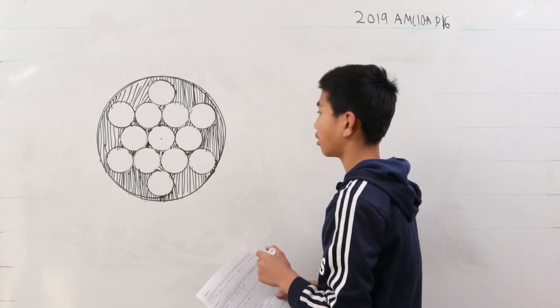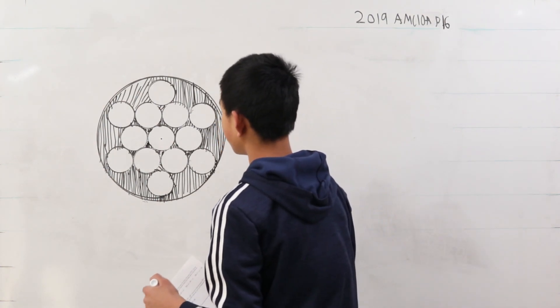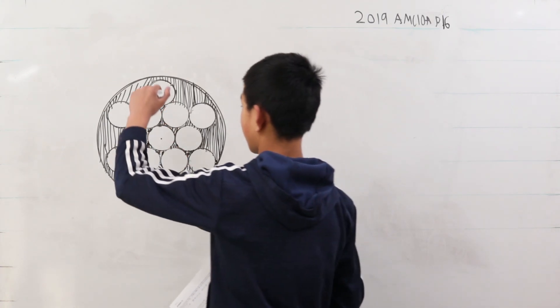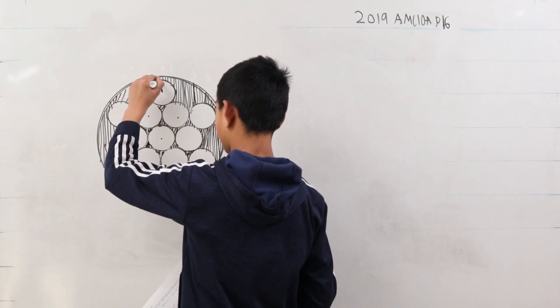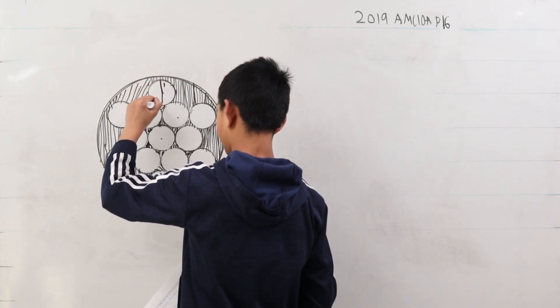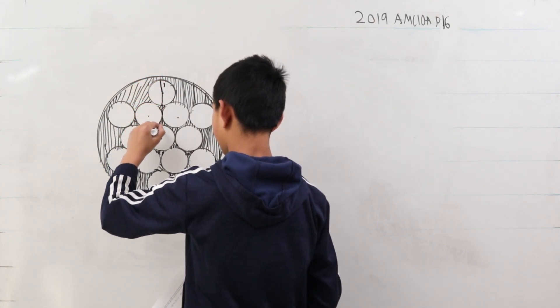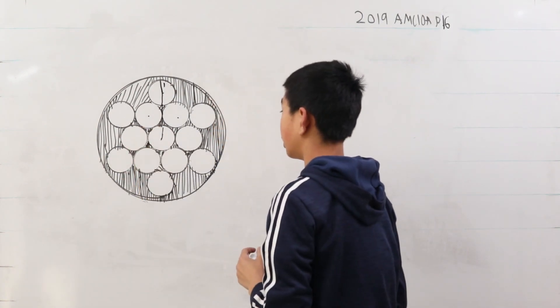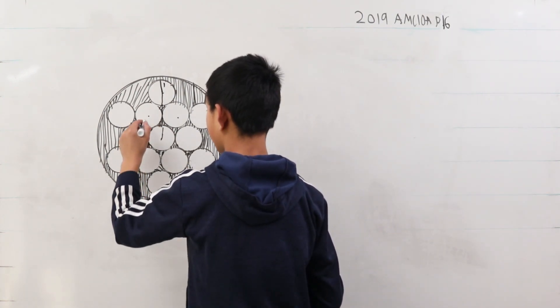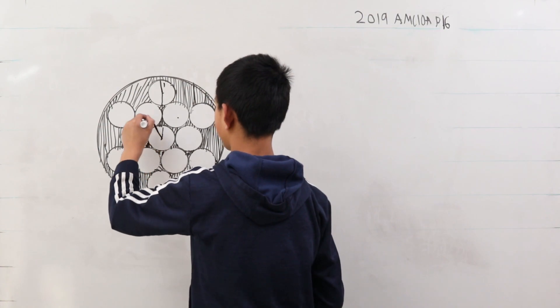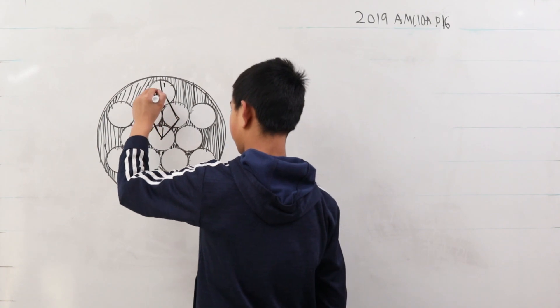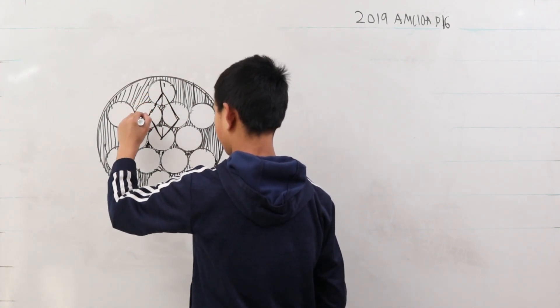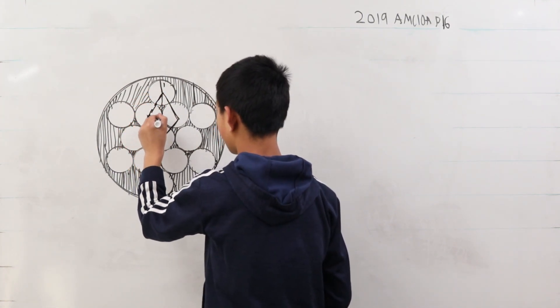So they have radii 1. We want to find the radius of this entire circle, from here all the way over here. What we can do is construct this figure from the radii of the centers of these circles to this pyramid-looking thing.